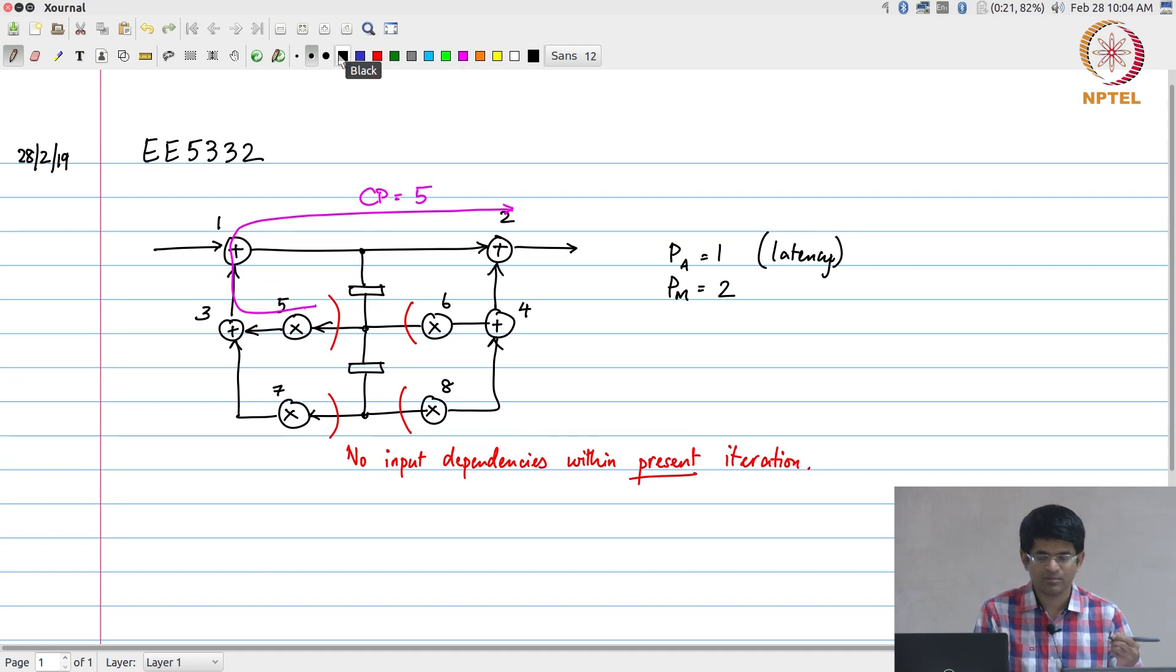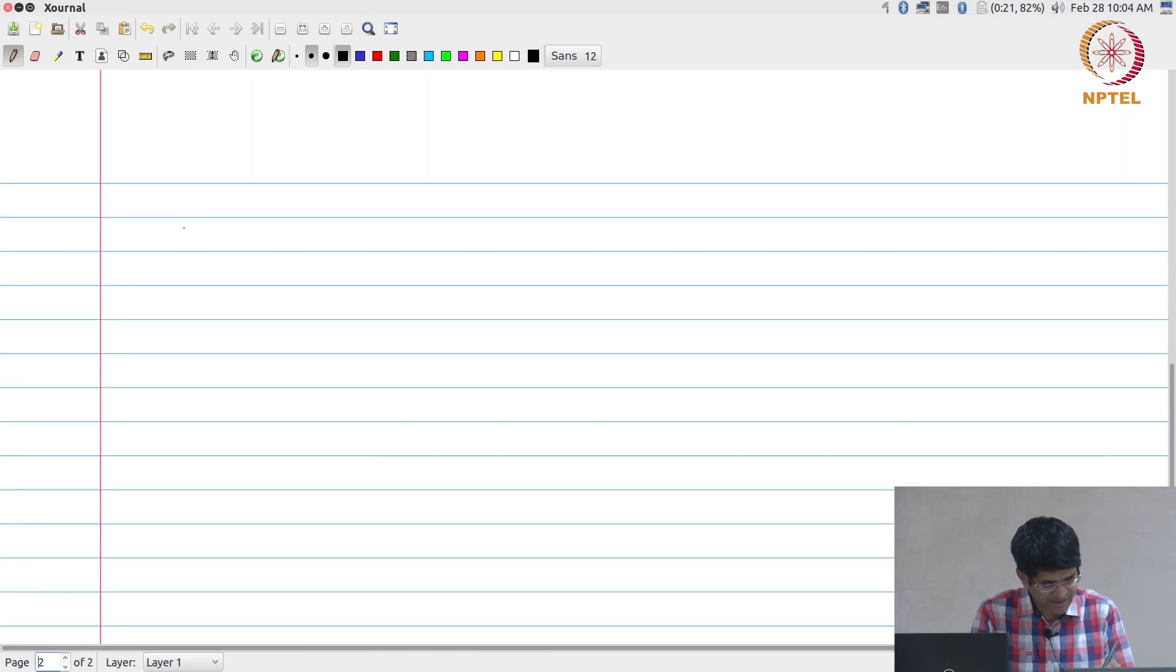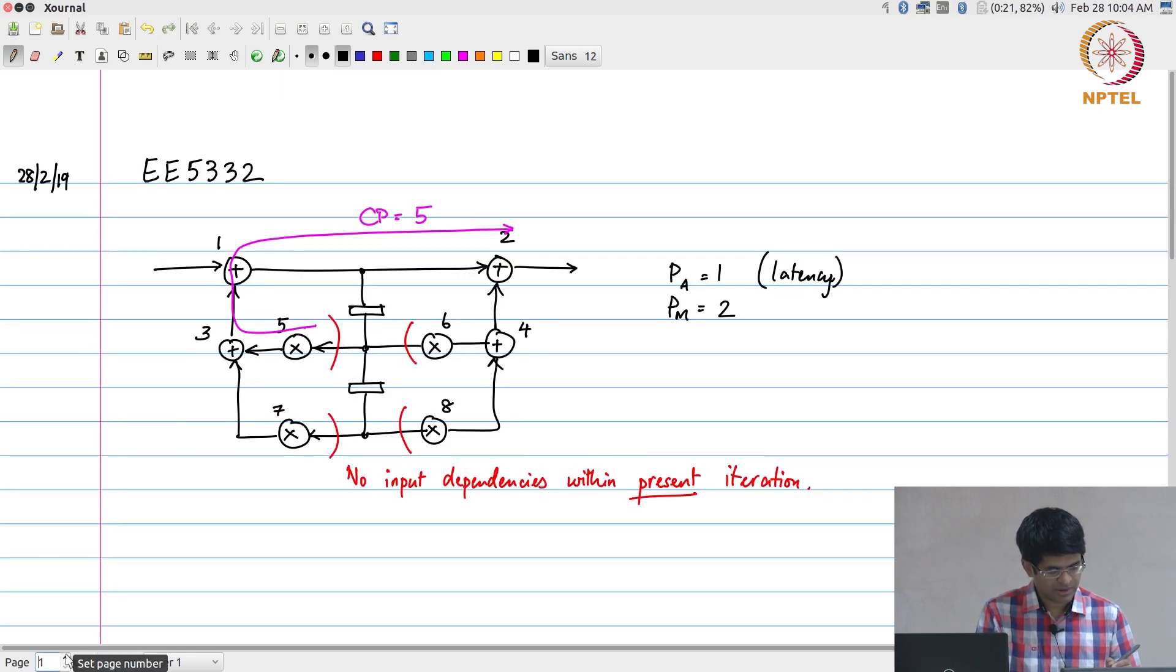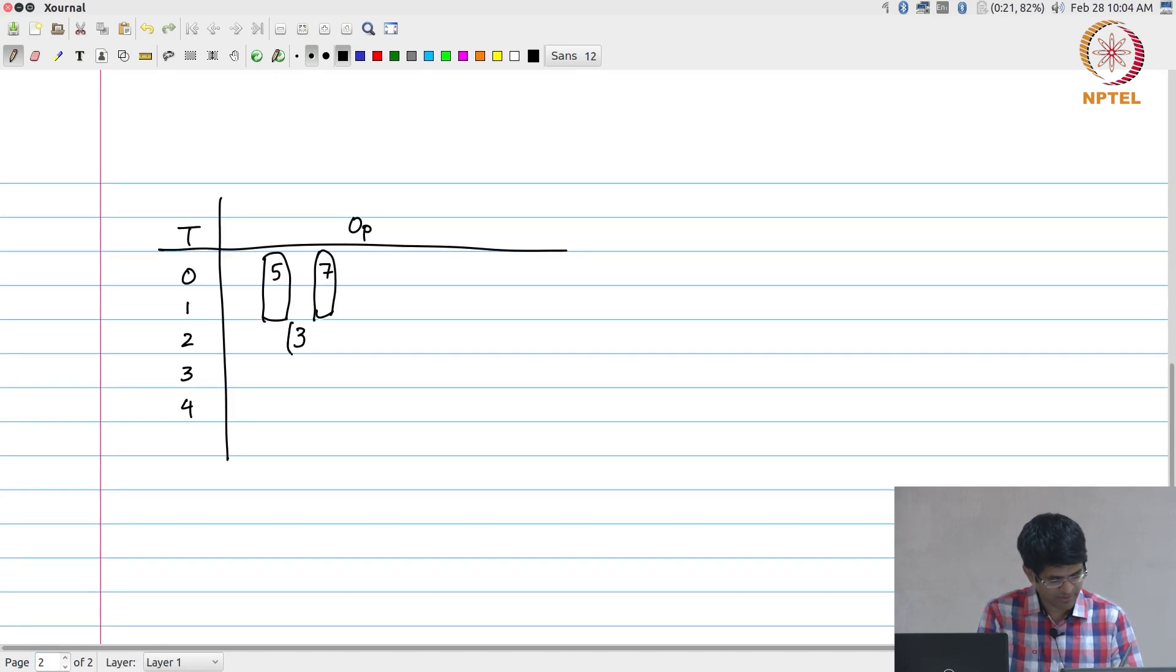And once I have got all of that in place I can then say, okay, if I wanted to construct a schedule of 5 time units, how do I go about doing this? I can basically put down my different time instances 0, 1, 2, 3, and 4 and list the operation over here. What I see is 5 and 7 can be scheduled right at the start. Their outputs are then consumed by 3, which can therefore execute immediately after that, and since it is an addition it just finishes within one clock cycle.